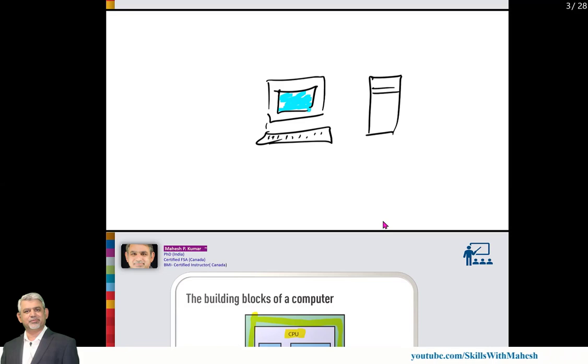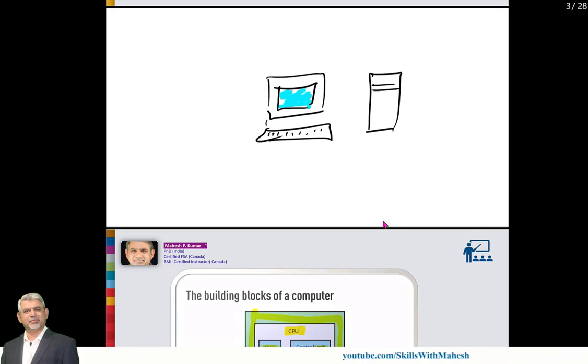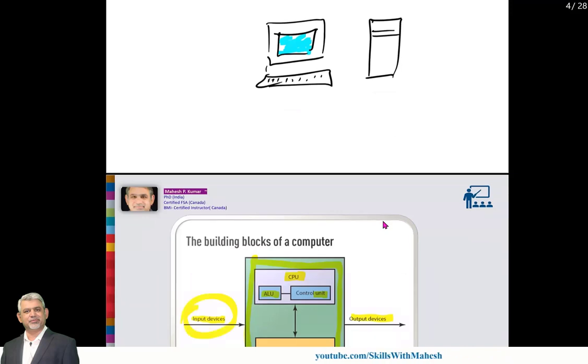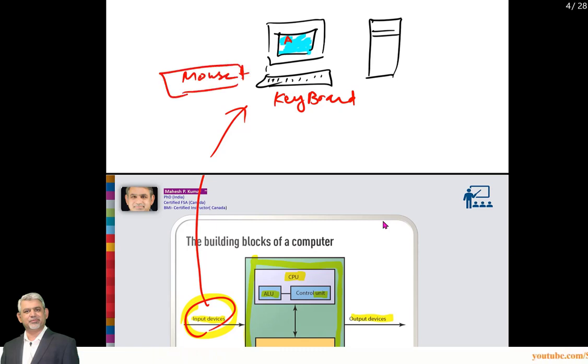Input devices - your keyboard is an input device. You type here and it appears on the screen. You type letter A on the keyboard, it appears on the screen. Keyboard is an input device. You use mouse, this is an input device. From mouse you can enter something here. These are input devices.